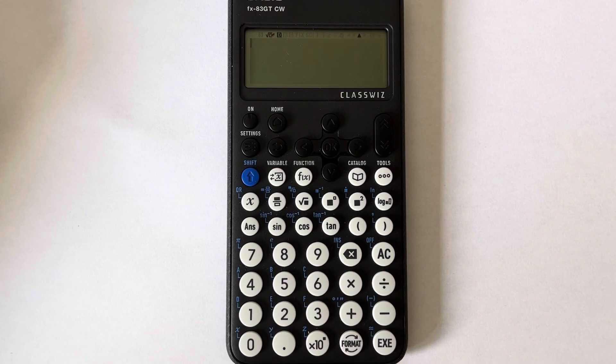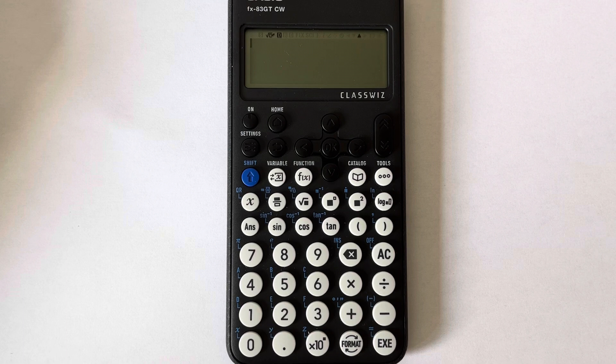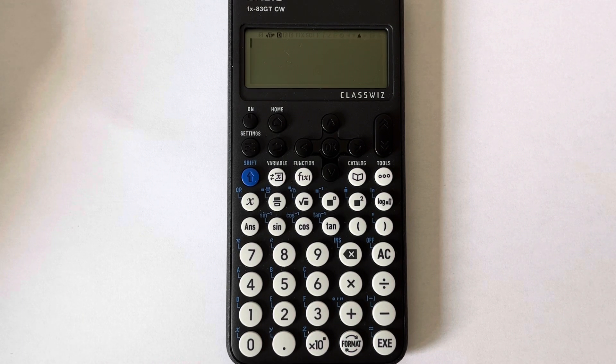Hi guys, welcome back. Today I'm going to show you how to work out the highest common factor on the Casio fx-83 GT CW scientific calculator. Let's work out the highest common factor of 120 and 160.